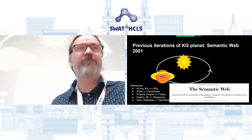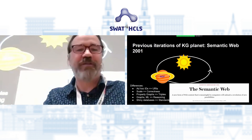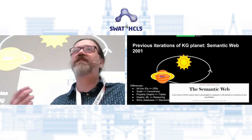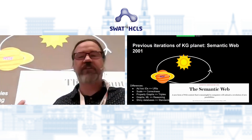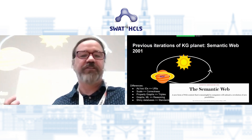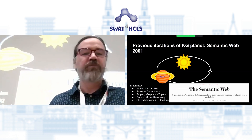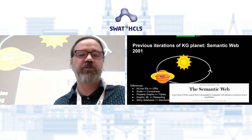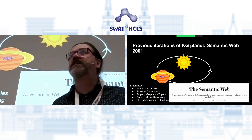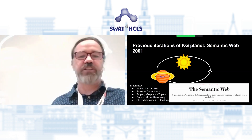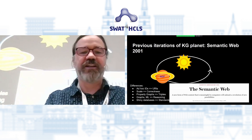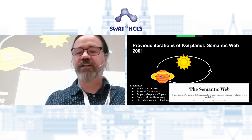Some key points: there's maybe less emphasis on URIs — URIs are one of the central components of the semantic web, allowing us to unambiguously identify things, but this seems to be less important to people in this iteration. There's more emphasis on scale, more emphasis on property graphs over simple triples, more emphasis on machine learning and graph-theoretic algorithms rather than classical deductive reasoning and knowledge representation-style reasoning, and also more emphasis on shiny graph databases, perhaps at the expense of standards.